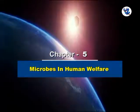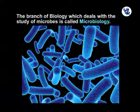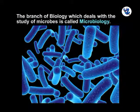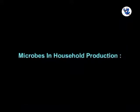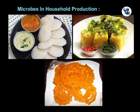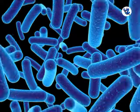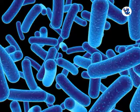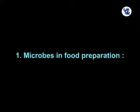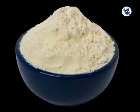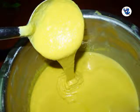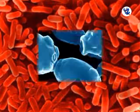Microbes in human welfare. The branch of biology which deals with the study of microbes is called microbiology. Microbes in household production: idli, dhokla, and jalebi are common Indian delicacies. Their production involves fermentation. The dough for dhokla is prepared by mixing gram flour (besan) with buttermilk, and lactobacilli bring about the fermentation process.